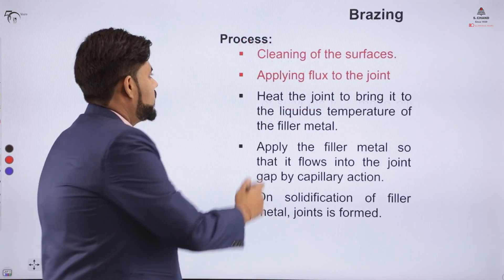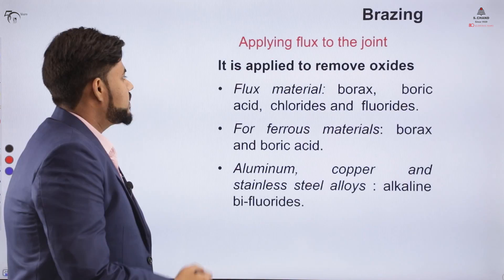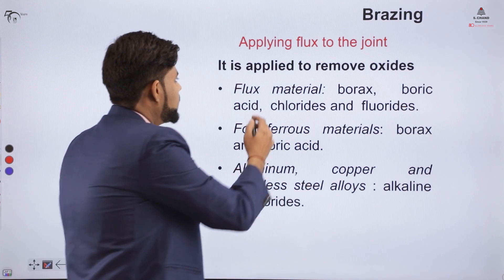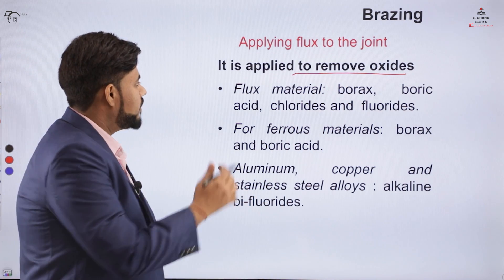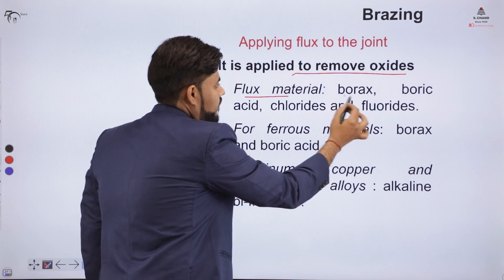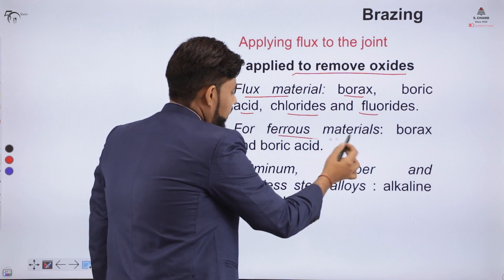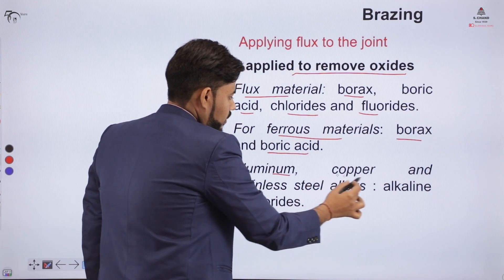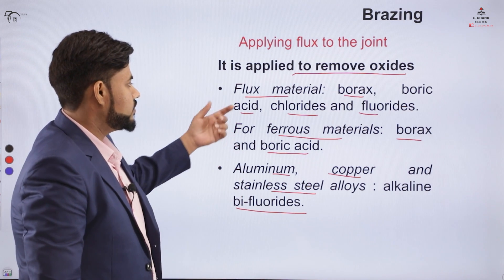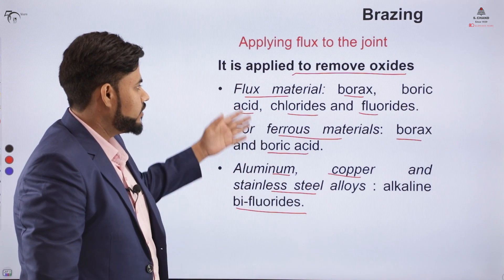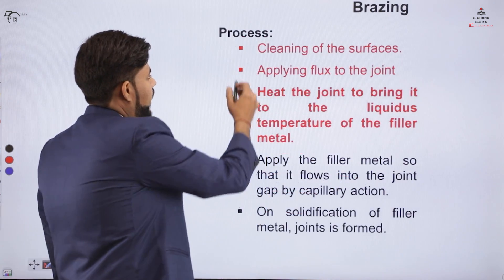The second step is applying flux to the joint. Flux is applied to remove any oxides which may form due to heating. The flux materials used in brazing include boric acid, chlorides, or fluorides. For ferrous materials, boric acid is used; for aluminium, copper, or stainless steel, we use alkaline bi-fluorides. This helps determine which flux is required for each material.